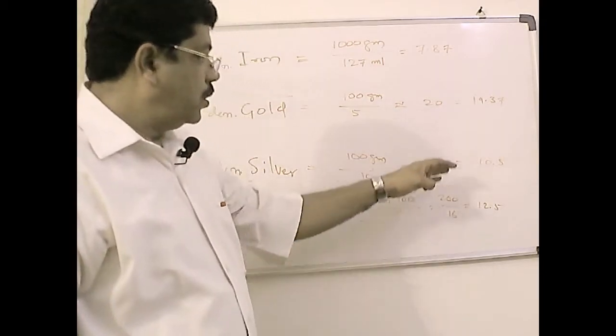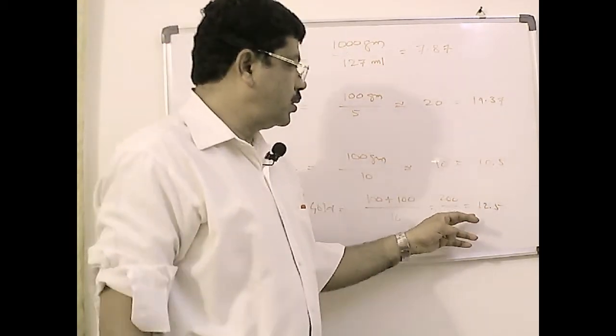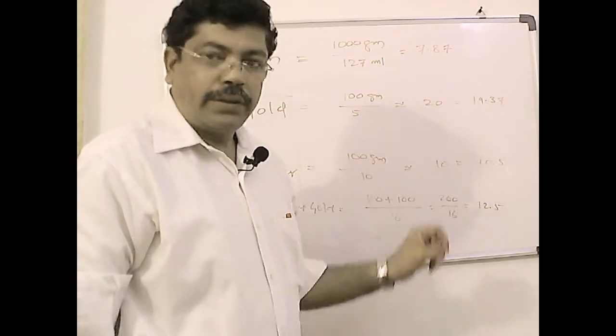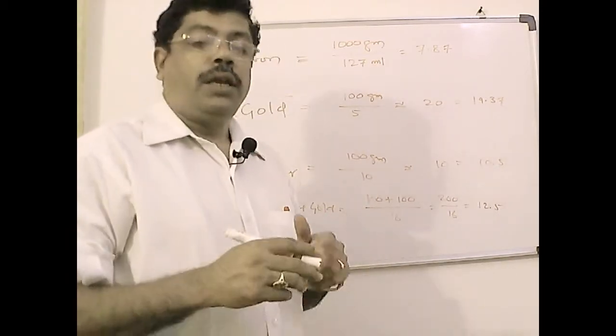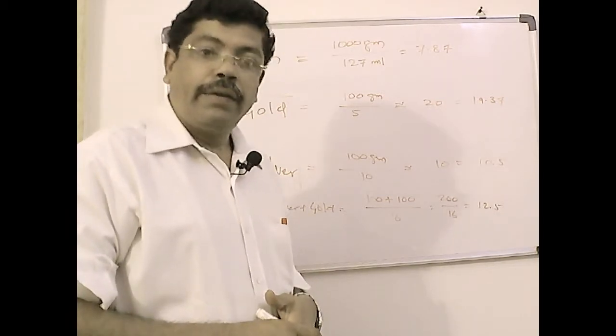So it is in between the gold and silver, which is not representing either direct gold or direct silver. That means it is a mix here.